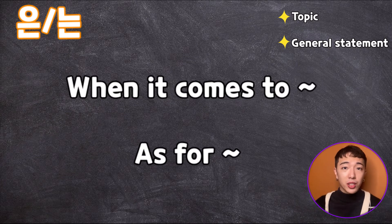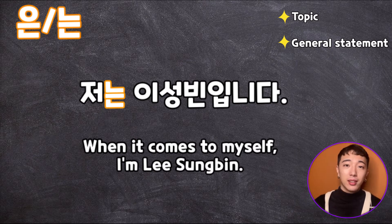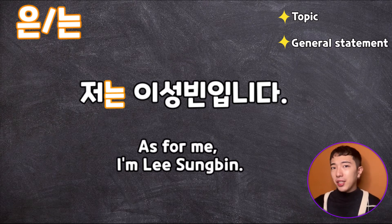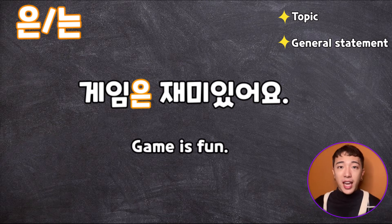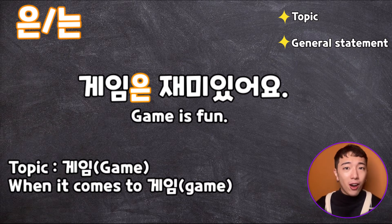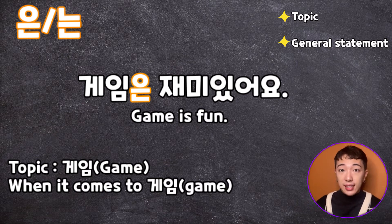은/는 is a topic marking particle that refers to 'when it comes to' or 'as for' in English. When it comes to myself, I'm 이성빈. As for me, I'm 이성빈. Here's another example: 게임은 재미있어요 — Game is fun. 은 is used because 게임 ends with a consonant. The topic is game. When it comes to game, game is fun. Game은 재미있어요.